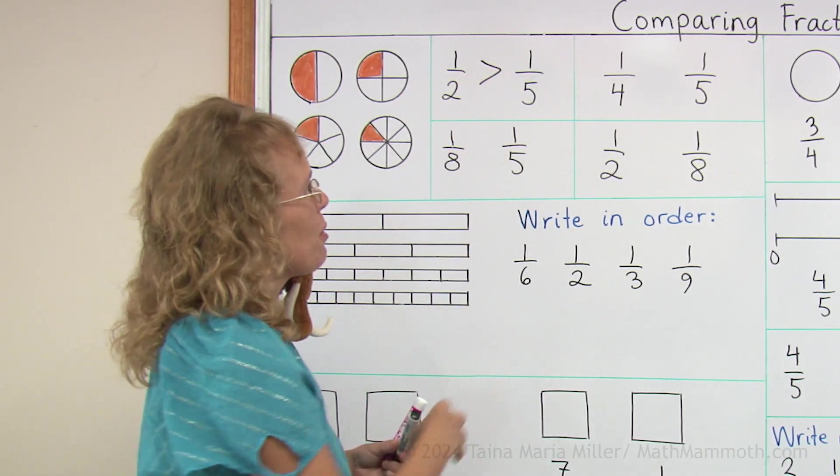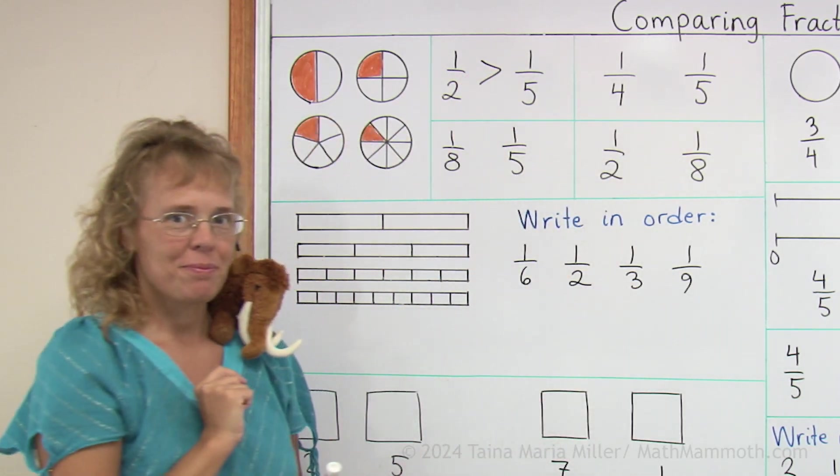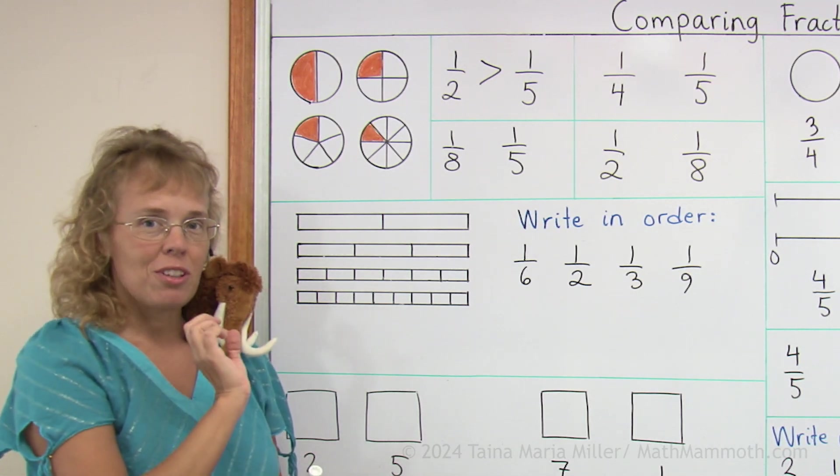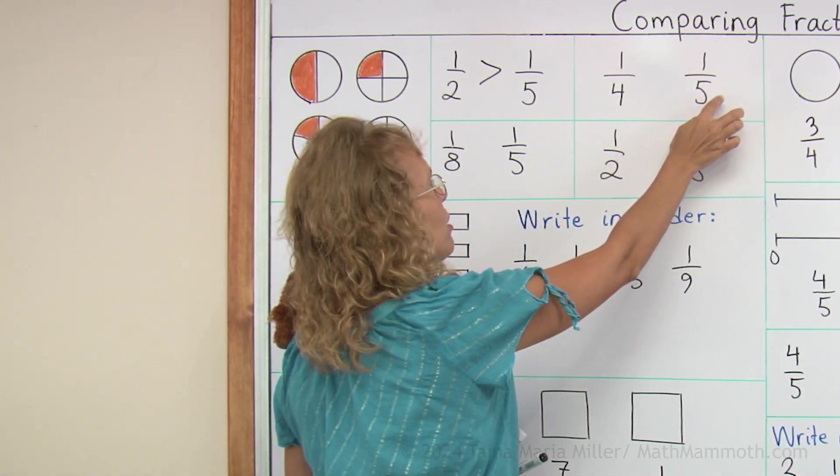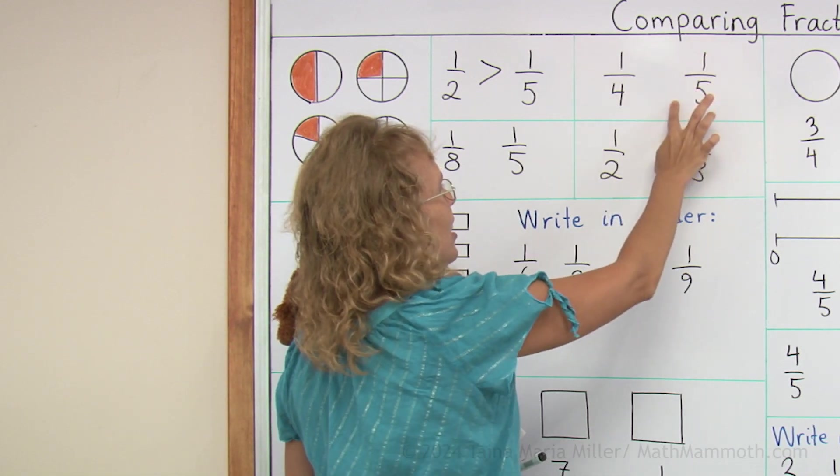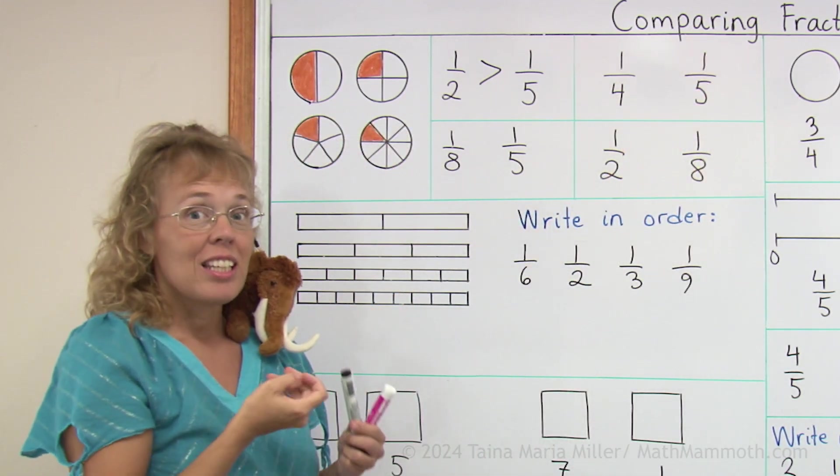How about one fourth and one fifth? Now don't look at the numbers five and four and think that five is more, so this is the greater fraction, because that is not so. The opposite is true.